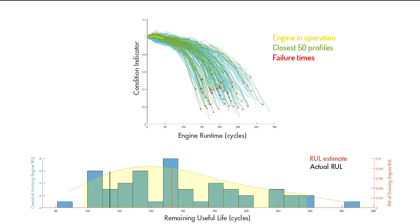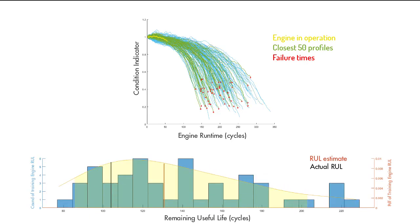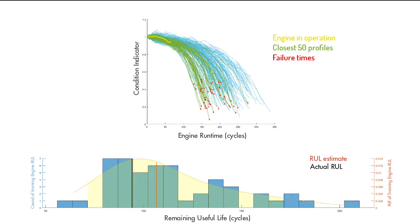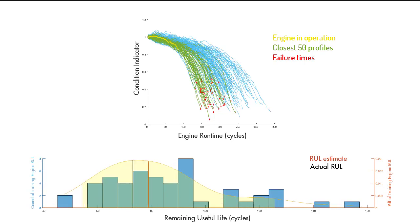we train the similarity model with a larger set of data. As a result of this, the prediction accuracy improves over time. We observe that the closest paths become more concentrated and the predicted RUL starts to converge to the actual RUL.